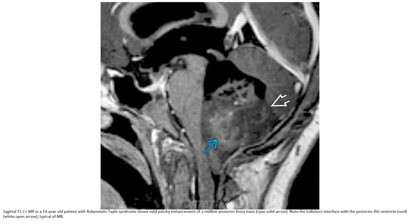MRI with contrast in a 14-year-old patient with Rubinstein-Taybi syndrome shows heterogeneous enhancement of the midline posterior fossa mass. Note the indistinct interface with the posterior fourth ventricle, typical of medulloblastoma.